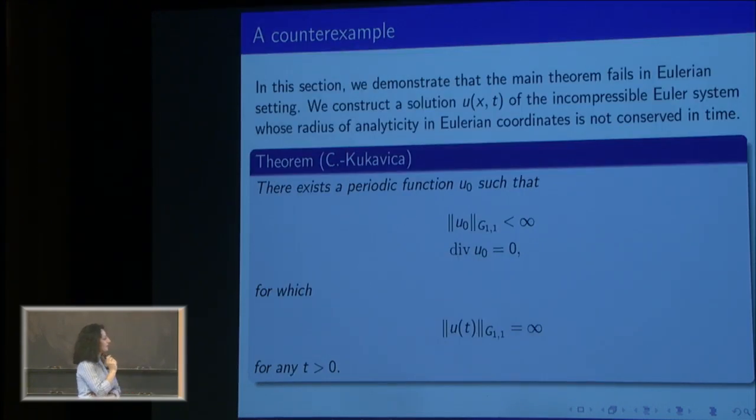One important or interesting thing for me is that this type of result may fail in the Eulerian setting. Given our functional setting, one can actually construct an initial data for the Eulerian coordinates which is incompressible and belongs to a certain real analytic class, not even Gevrey regular. The solution of the Euler equation with this initial data gets kicked out of the analytic class immediately for any positive time t. It doesn't belong to the real analytic class anymore.